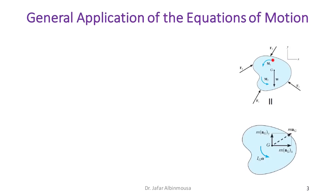If we have a rigid body acted upon by several forces and moments causing it to move in general motion — translation and rotation — and we consider a Cartesian coordinate system, then we can write down the equations of motion as follows.